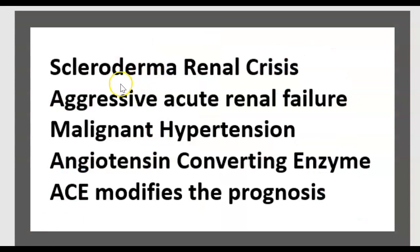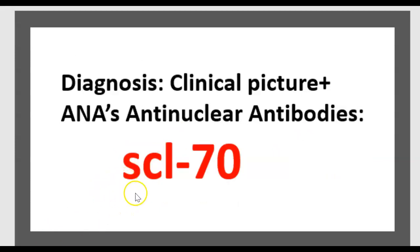Kidneys are affected in scleroderma. We recognize the renal crisis — an aggressive acute renal failure — by malignant hypertension. We can treat that with ACE inhibitors, which modify the prognosis. To make the diagnosis: clinical picture plus ANA anti-nuclear antibody SCL-70, which stands for scleroderma-70.